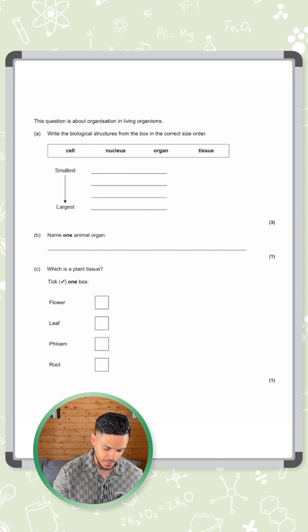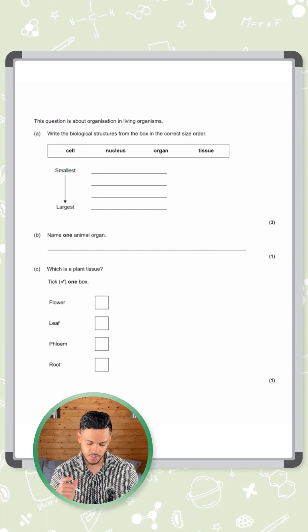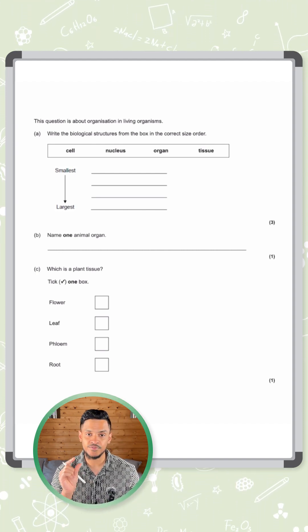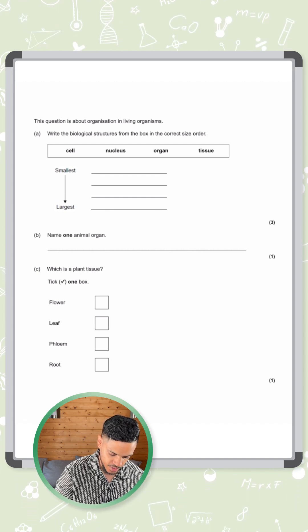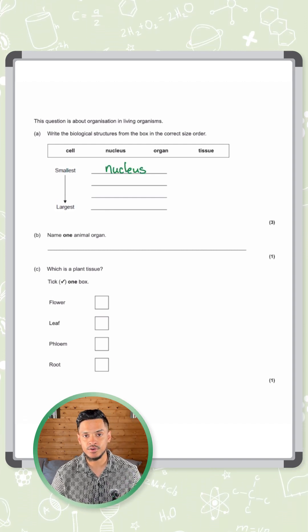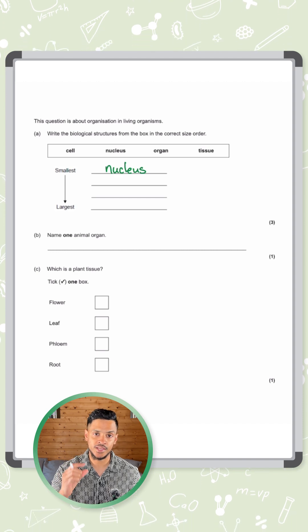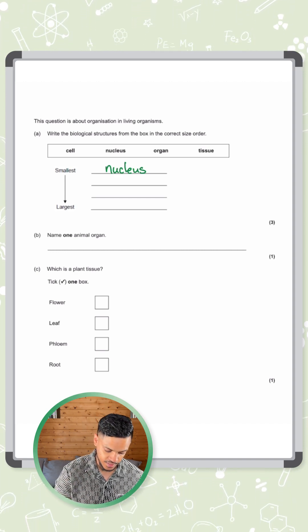So let's think about what we have here. We've got the nucleus which is probably the smallest in all of these because you find the nucleus inside a cell. So the first answer here would be nucleus. Then after that we say cell because a nucleus is found in the cell, so the cell is bigger than the nucleus.